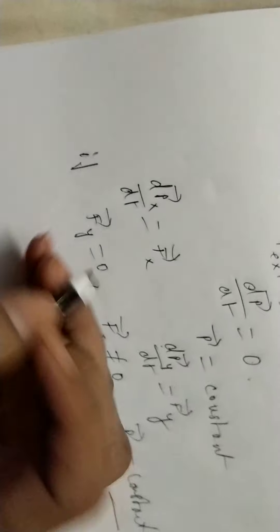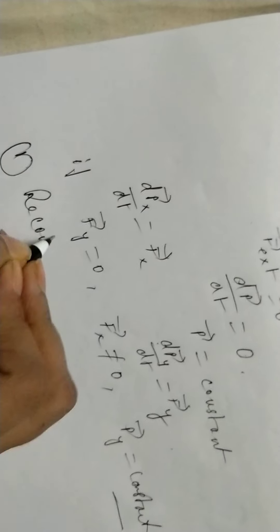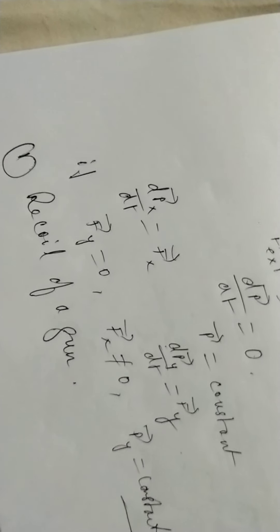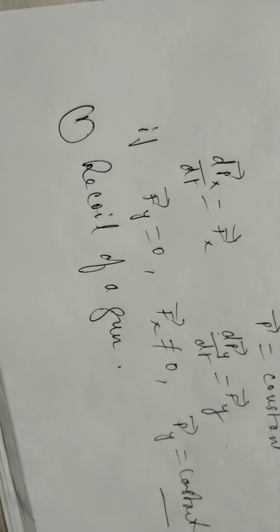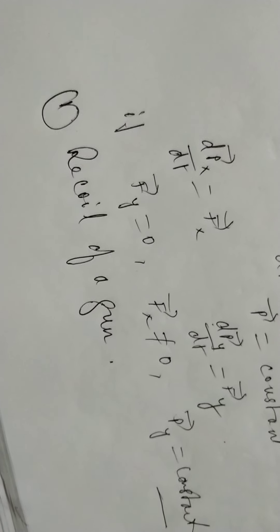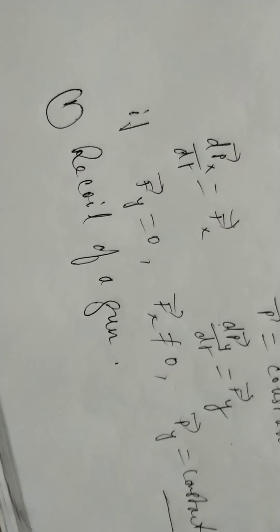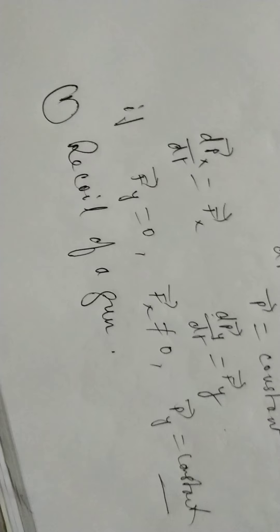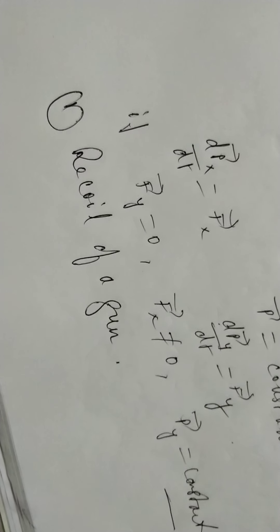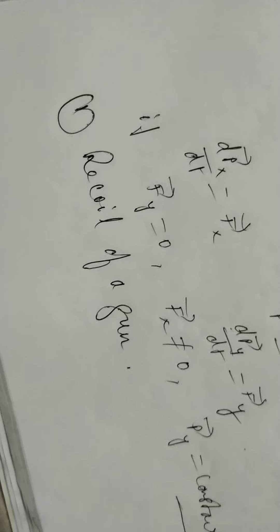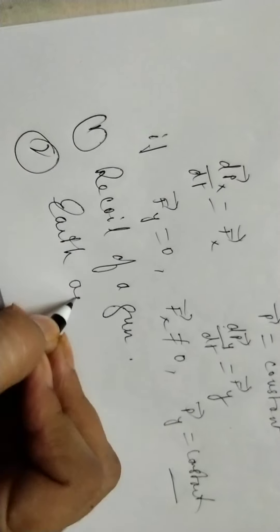Now the question is where we apply the law of conservation of linear momentum. The first example is the recoil of a gun. When a bullet is fired from a gun, the gun gives a large velocity to the bullet in the forward direction. The bullet acquires momentum in the forward direction and exerts a reactionary force on the gun, which is pushed back with equal momentum in the backward direction.